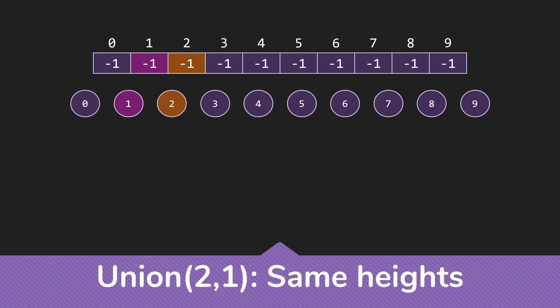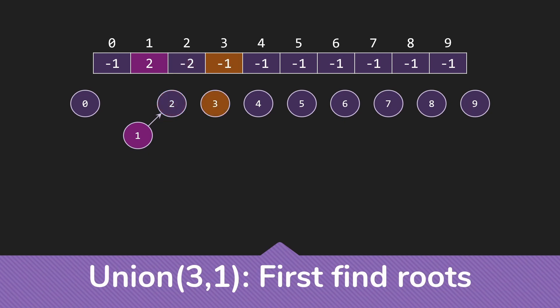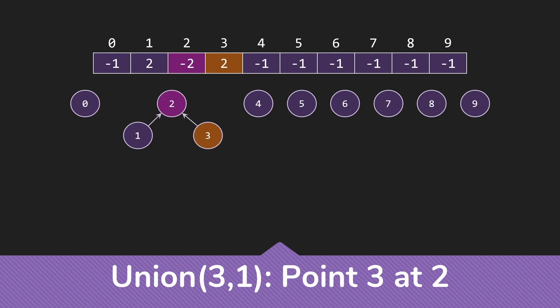Let's work through an example. Unioning 2 and 1: they have the same height, so we point 1 at 2 and subtract one (since we're working with negatives) to update the height of the tree. When we union 3 and 1, we find the roots again — that's 2. Set 2 is taller since it has the larger magnitude, smaller value. So we point 3 at 2. Those heights were different, so the height of the tree has not changed — it is still 2. The same pattern would continue as with the size example, with everything pointing at 2.